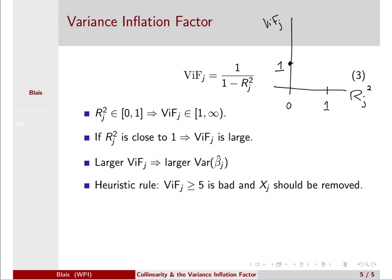And then as we increase rj-squared from 0, we are shrinking the denominator, but it is remaining positive. So as we move in the domain to the right from 0, we are increasing in our variance inflation factor. And if we go all the way to the case when rj-squared is equal to 1, that would result in a 0 in the denominator.